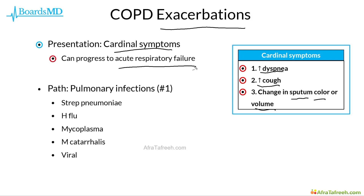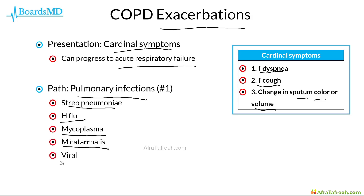The number one cause underlying COPD exacerbations is pulmonary infections, including Streptococcus pneumoniae, Haemophilus influenzae, Mycoplasma pneumoniae, Moraxella catarrhalis, as well as viral infections including influenza. With Strep pneumoniae and viral infections being major causes of COPD exacerbations, this is why it is so essential that we give our patients vaccines for these infections.